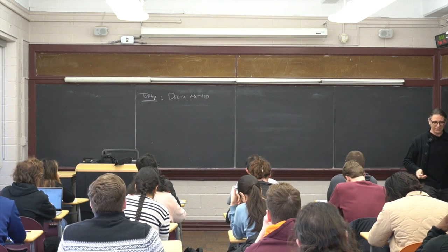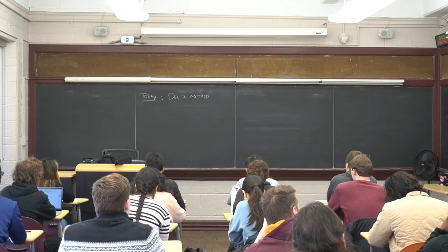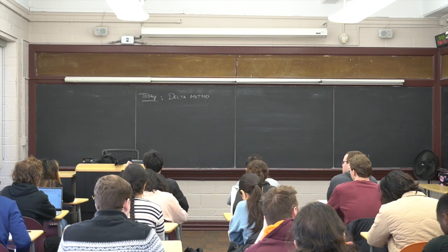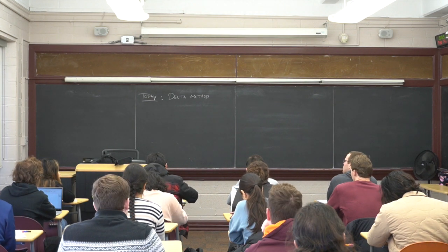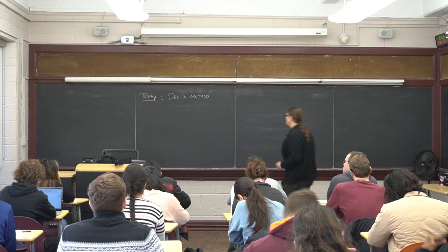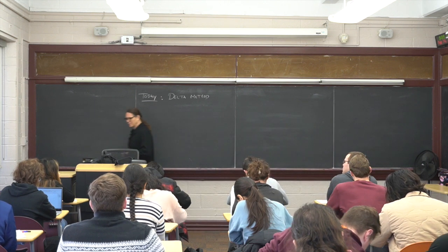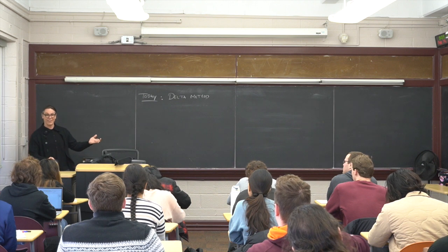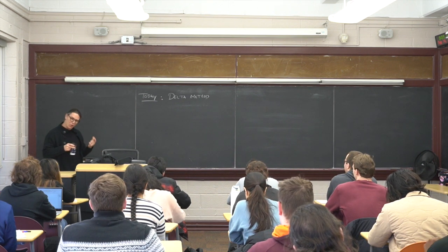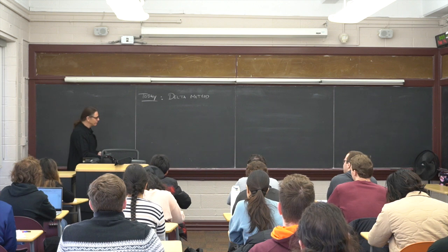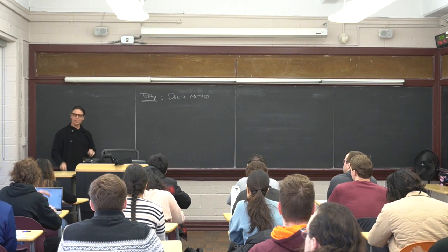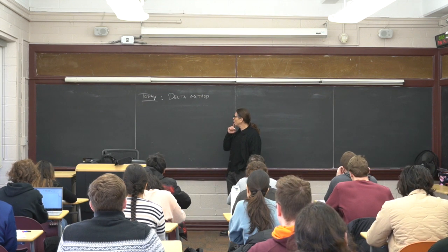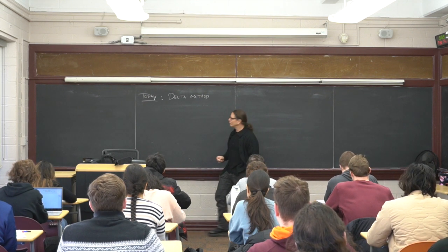Usually if I tell you don't worry about something, that's exactly what you'll worry about, which is really weird. I would be inclined to say don't worry about the central limit theorem, but worry about it — I'm going to ask you at some point, guaranteed. Okay, delta method, and then we'll go through Bayes afterwards.